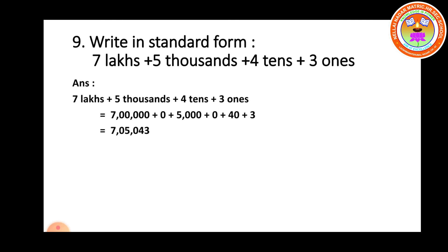Write in standard form: 7 lakhs plus 5,000 plus 4 tens plus 3 ones. 7 lakhs written as a number. After lakhs, 10,000 is not given, so put 0. Then 5,000. After thousands, hundreds not given, so put 0. 4 tens means 40, and 3 ones means 3. When we add, we get 7,05,043.